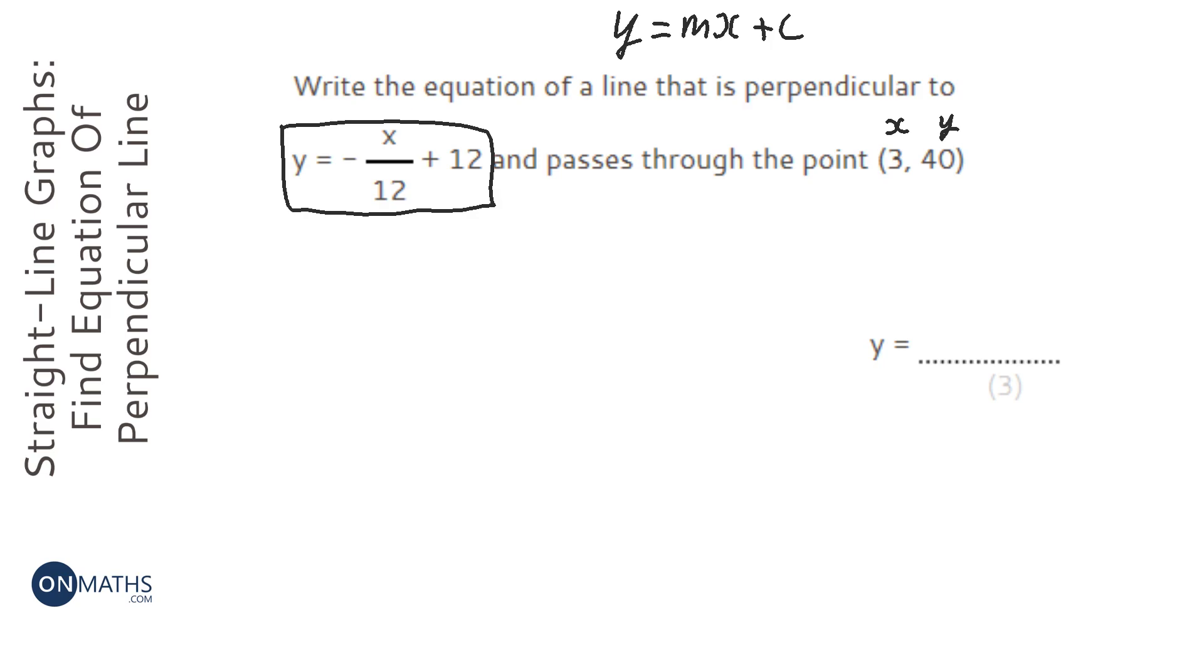So perpendicular, we can actually work out what the gradient of our line is through that information. We work out, first of all, what the gradient of that line there is, that I've put a box around, and that's going to be minus 1 over 12, which is the number before the x. Minus 1 over 12 times x is the same as minus x over 12.